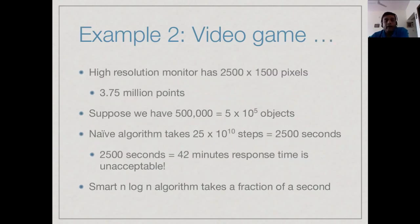What is this distinction between n square and n log n in this context? On a modern gaming computer with a large display, it is not unreasonable to assume that we could have a resolution of say 2500 by 1500 pixels. If we have one of these reasonable size 20 inch monitors, we could easily get this kind of resolution, so we will have about 3.75 million points on the screen. Let's assume we have 500,000 objects placed on the screen.